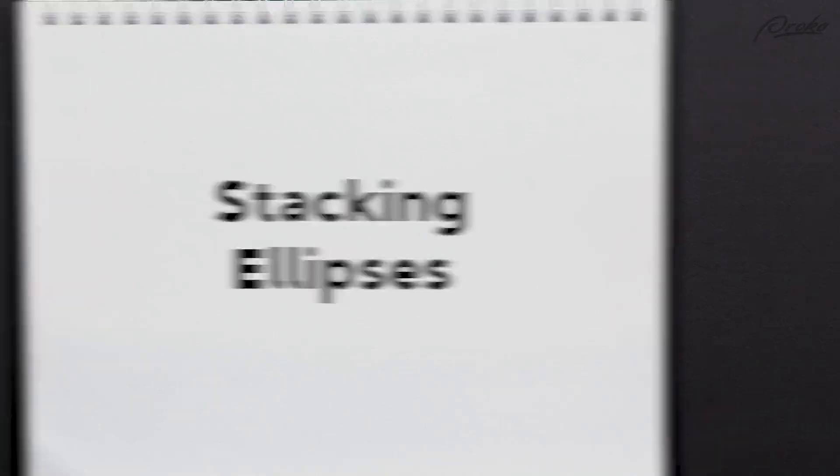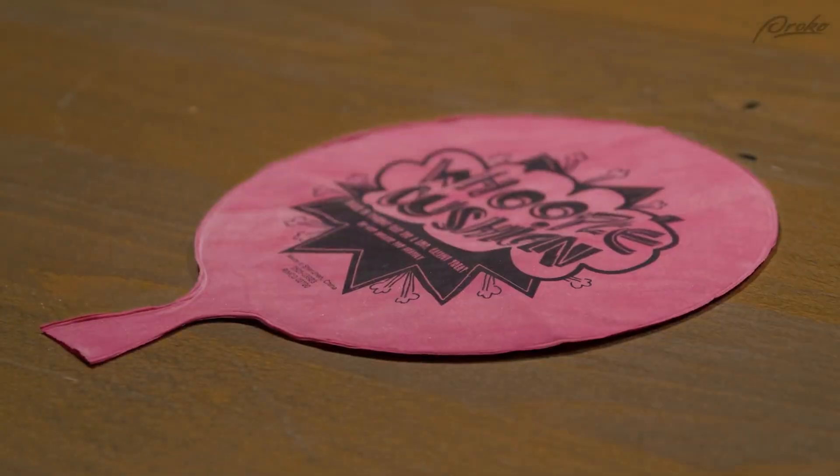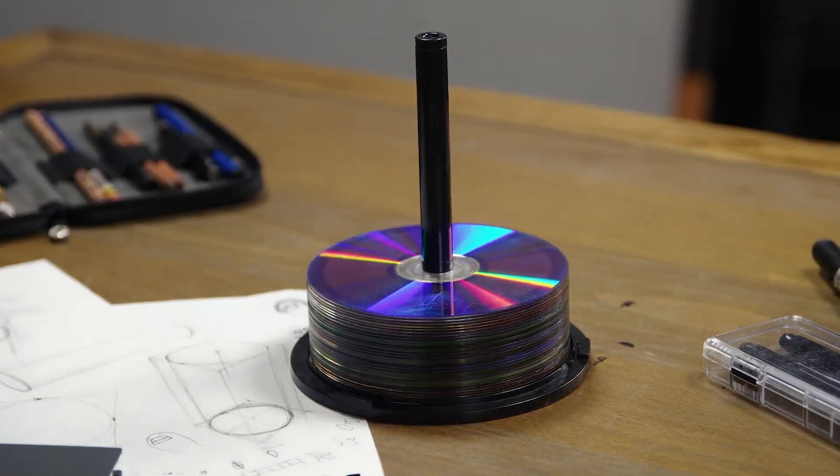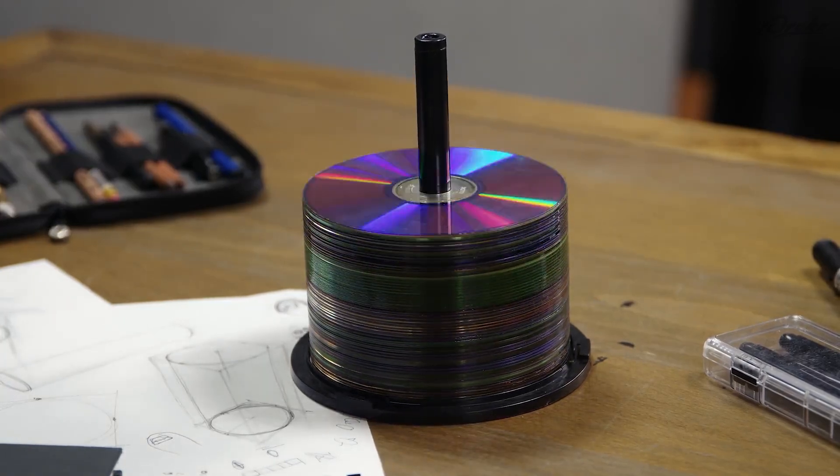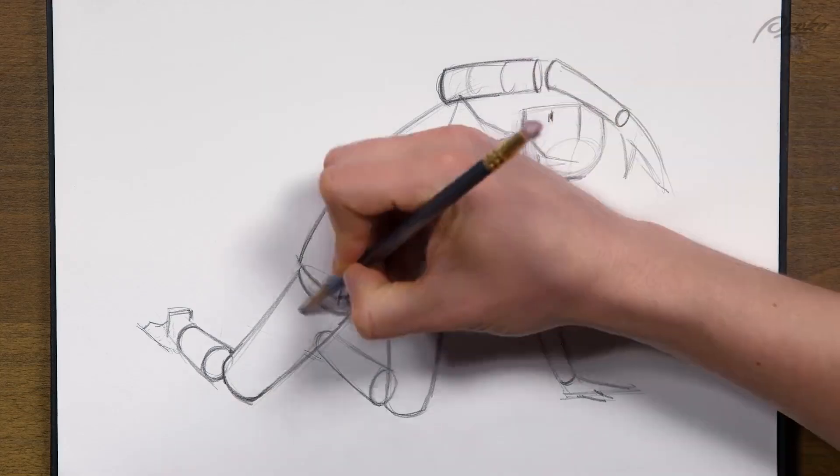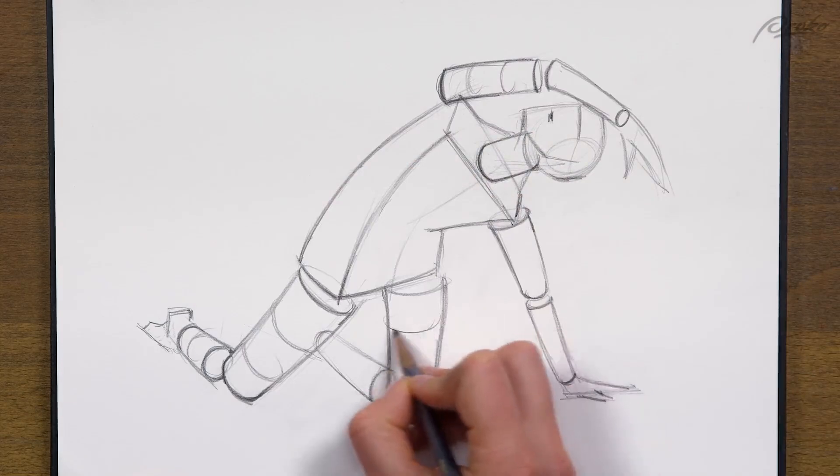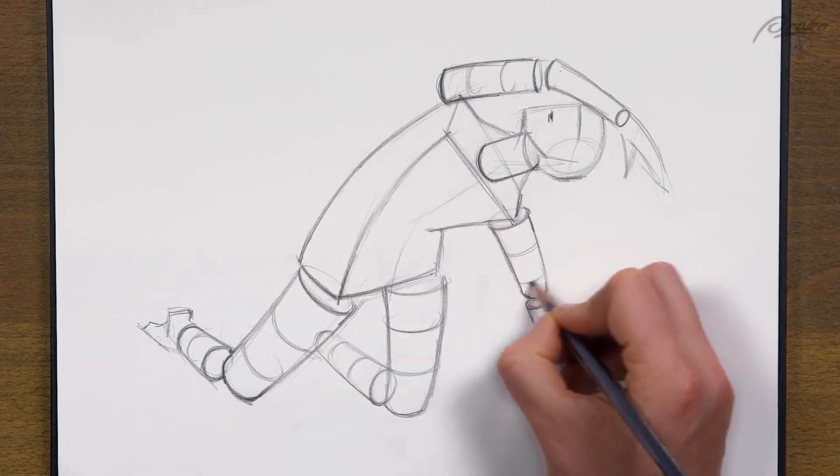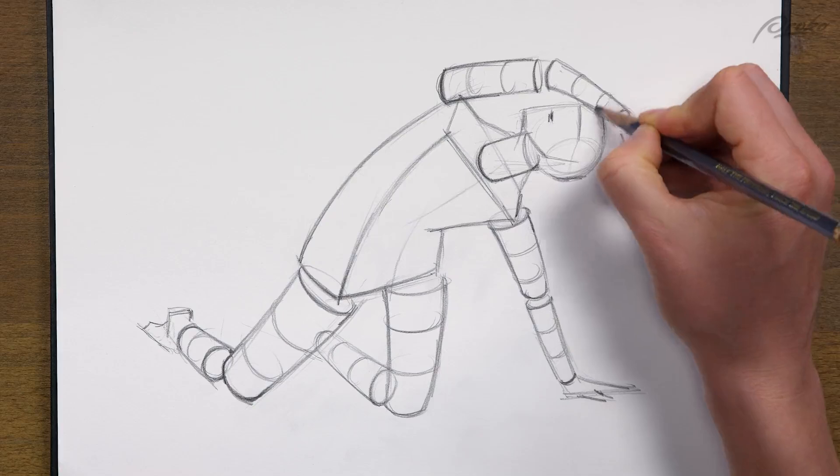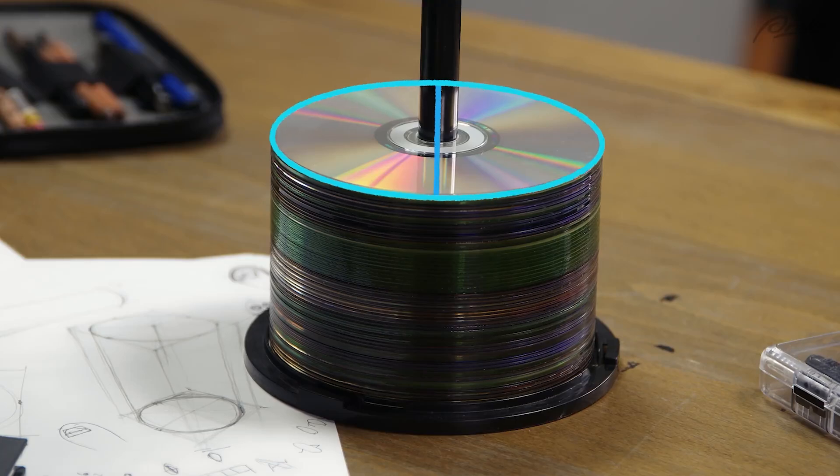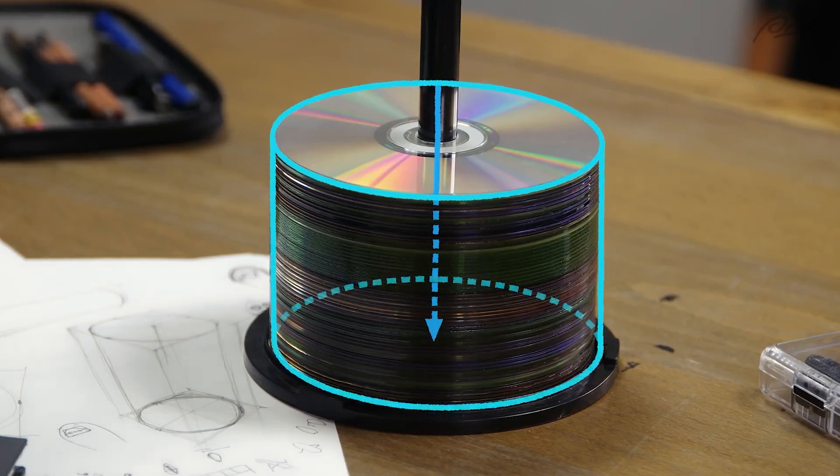Stacking ellipses. So an ellipse is flat, but a cylinder is not. A cylinder is basically a stack of ellipses. You'll sometimes see artists drawing these cross contour curves around a cylindrical form, like an arm or a leg. We're thinking about what the ellipse looks like at that cross section of the cylinder. When we're drawing a cylinder, we don't need to think of the ellipse at every cross section, but we at least need the two ends.